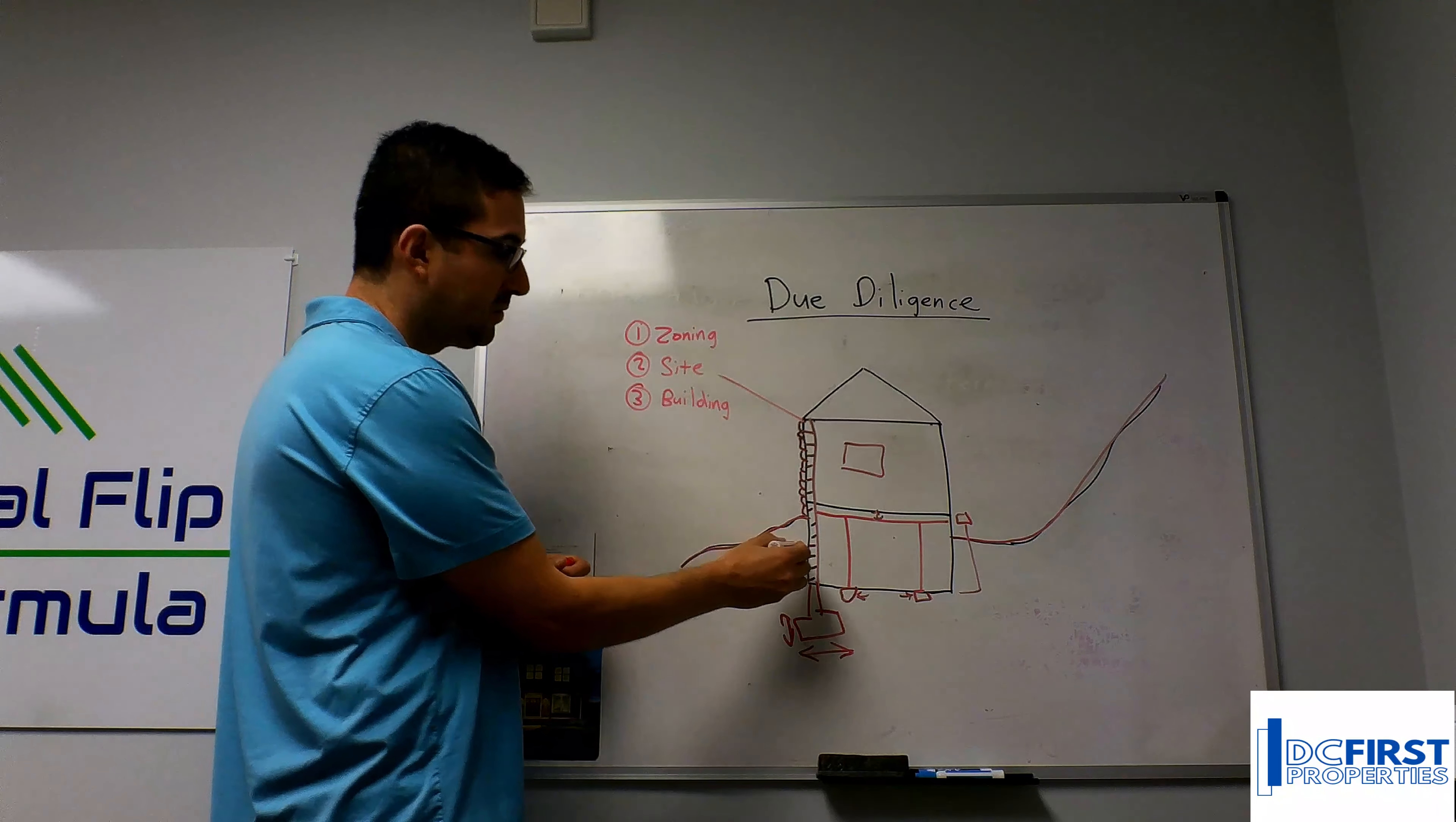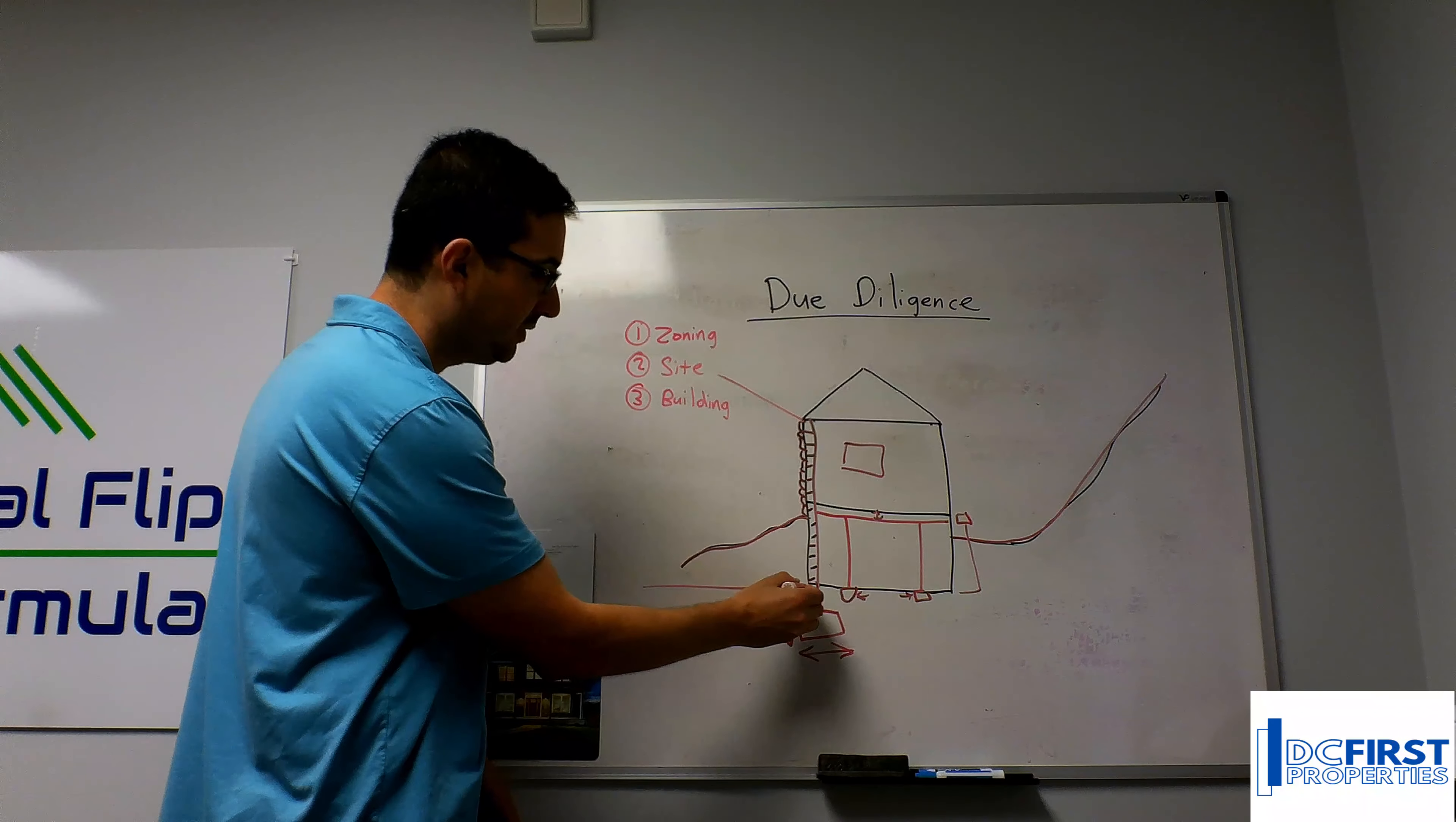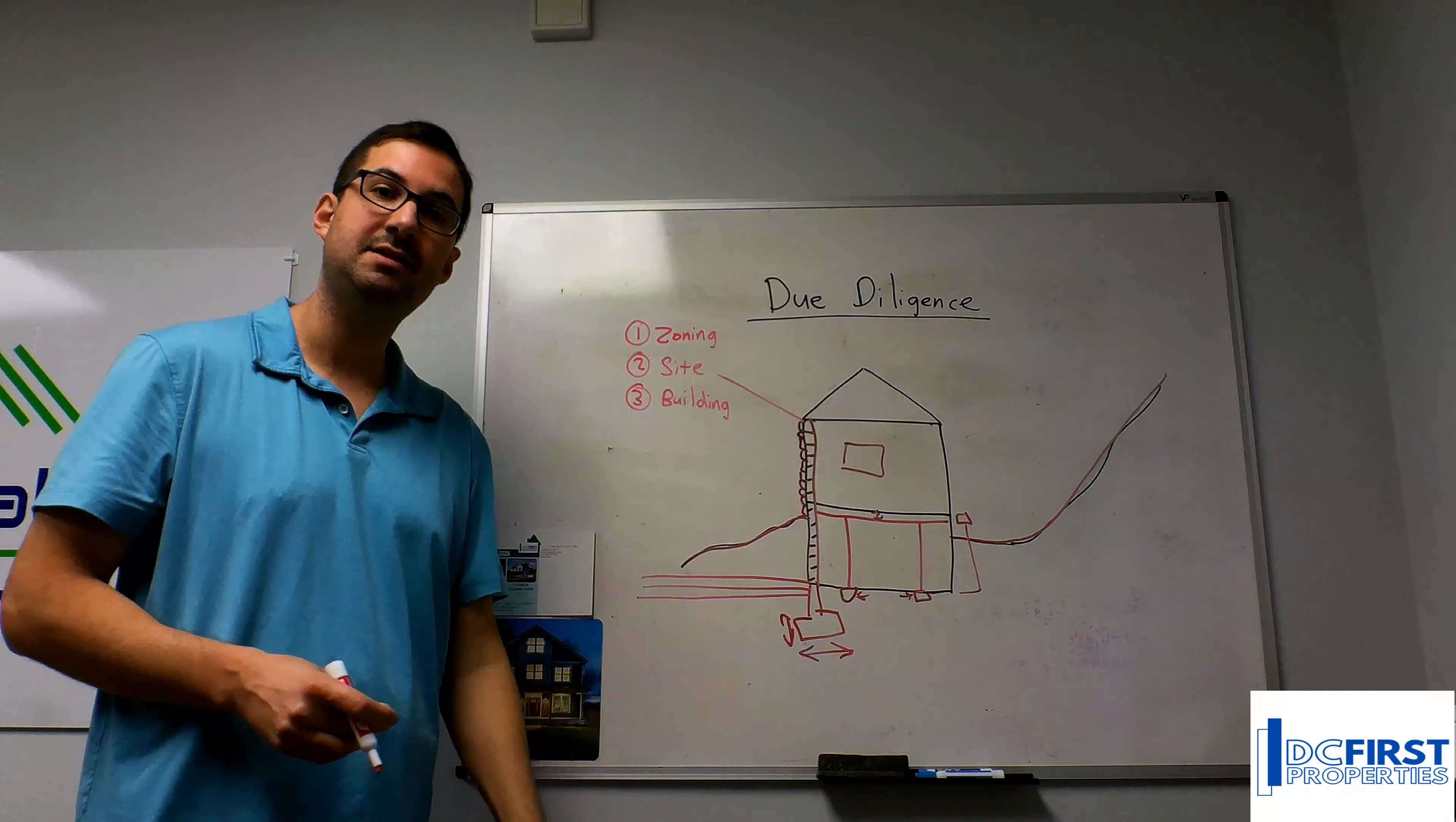The last piece will be sewer and water. Is the sewer coming in above the height of your basement slab, meaning you'll need an ejector pump? Or is it coming in below the basement slab and going out to the street? As well as the water line - what kind of water line is it? Is it a copper line that lasts 50 years?